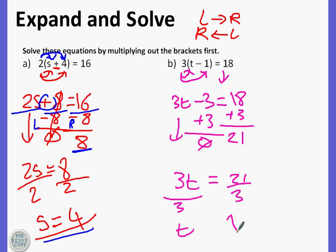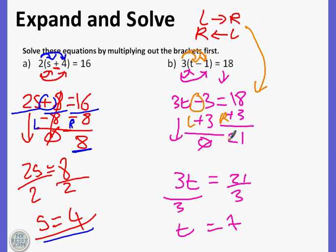So three t equals twenty one. We divide by three, which equals t divide by three, which equals seven. So t equals seven. To recap quickly: we did three times t and three times one to expand the brackets. The minus means we do the opposite and add - whatever we do to the left we do to the right. We get twenty one and three t, divide both by three, and t equals seven. So t equals seven and s equals four.